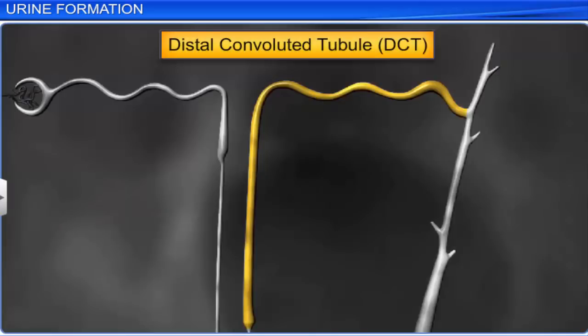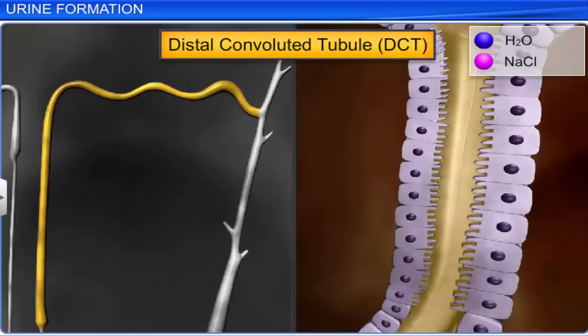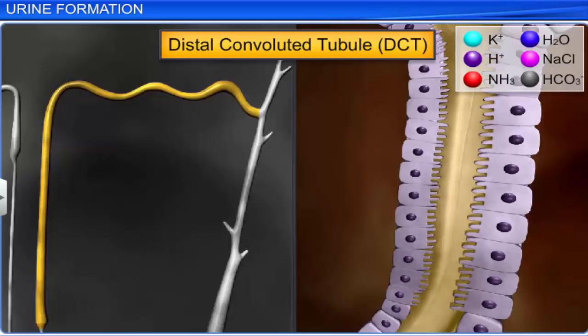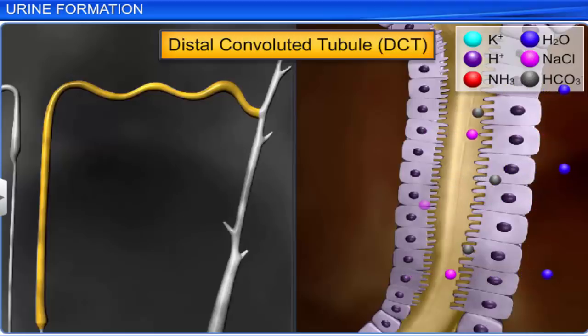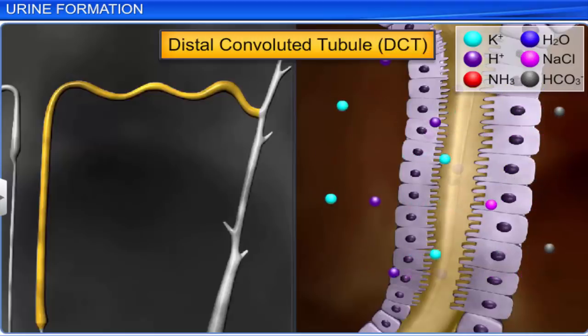Henle's loop is followed by the distal convoluted tubule, where conditional reabsorption of water and sodium occurs. This region helps maintain the sodium-potassium balance and pH level in the blood by reabsorbing bicarbonate and selectively secreting potassium and hydrogen ions and ammonia.